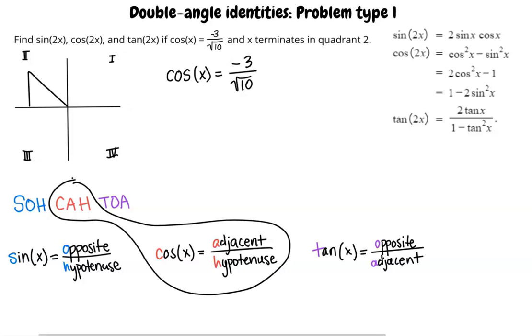Right now we will use cosine. Therefore, the adjacent side equals negative 3, and the hypotenuse equals square root of 10.